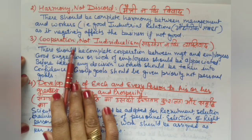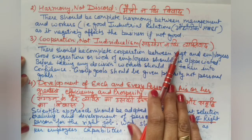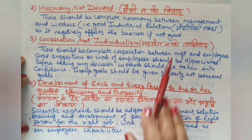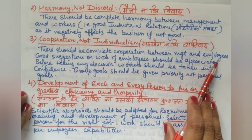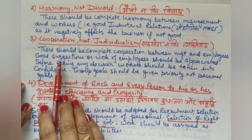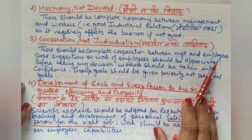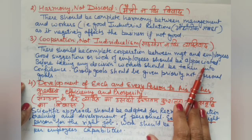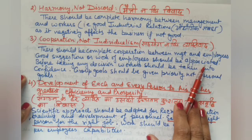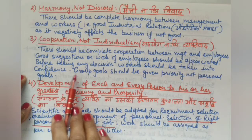The third principle is Cooperation, Not Individualism. There should be complete cooperation between management and employees. Cooperation means helping others in their work. Good suggestions from workers and employees should be appreciated. Management should listen to the suggestions of juniors and employees and appreciate them if they are good.